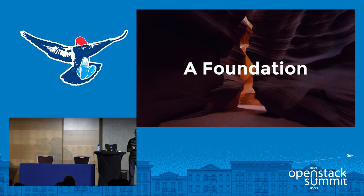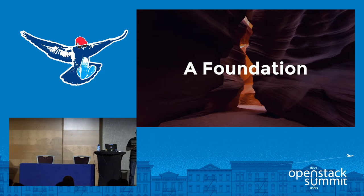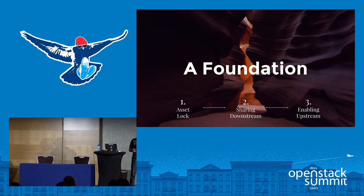A small digression on open source foundations: we usually talk about upstream and downstream. Upstream is what we mean by producing the software — writing the code. Downstream is everything that goes after the production of the code: users, deployers, packagers, people building products on top of it. Those are two very different segments of open source usage. An open source foundation usually provides three different types of things: an asset lock, sharing downstream, and enabling upstream.